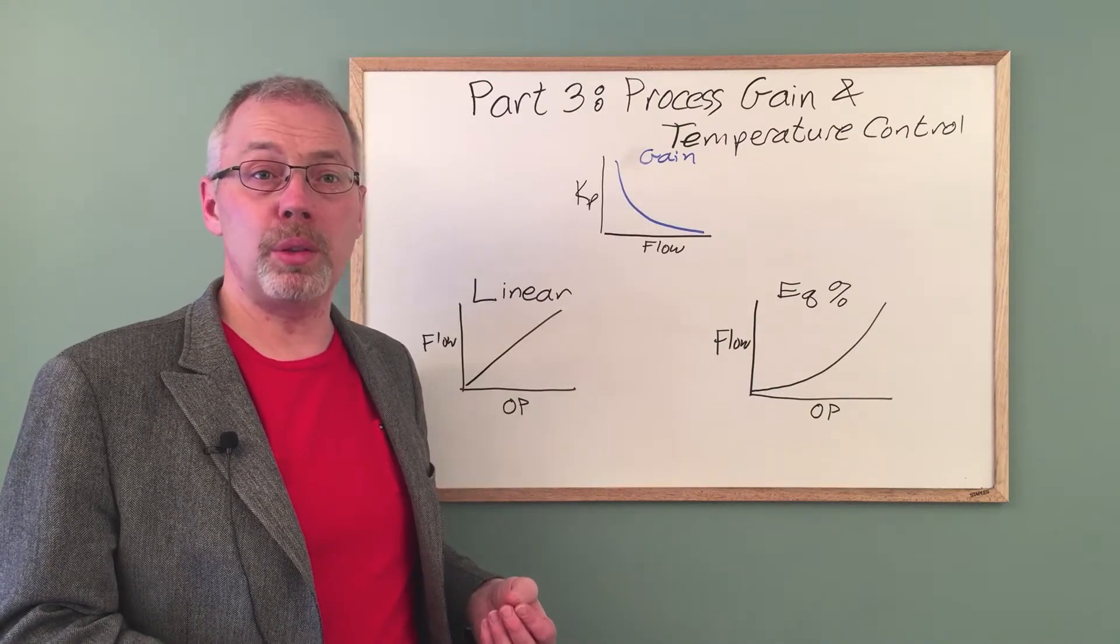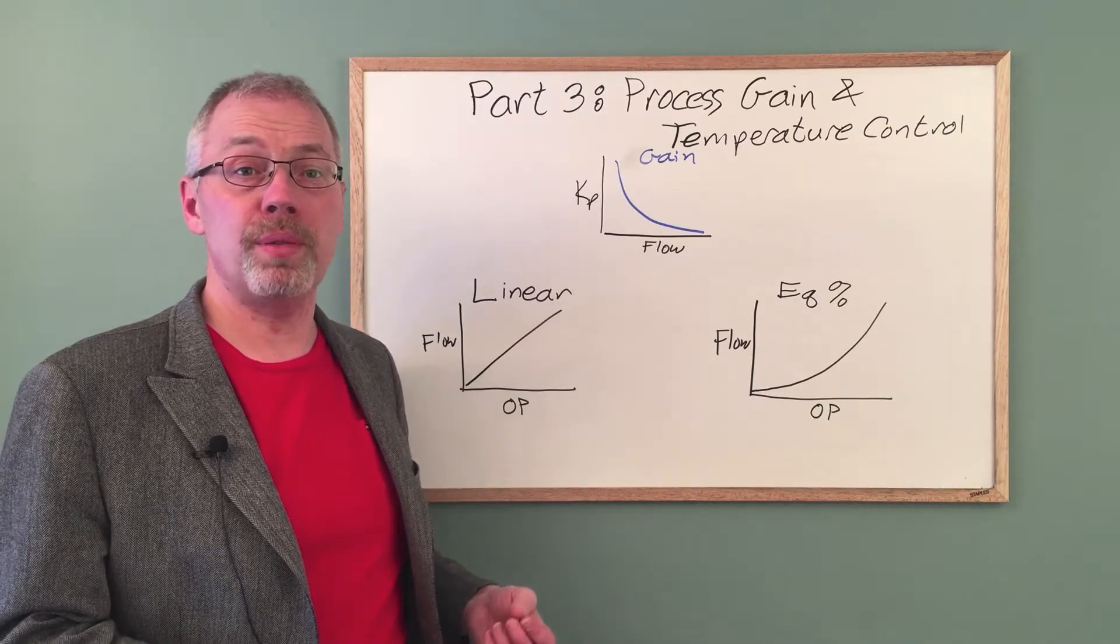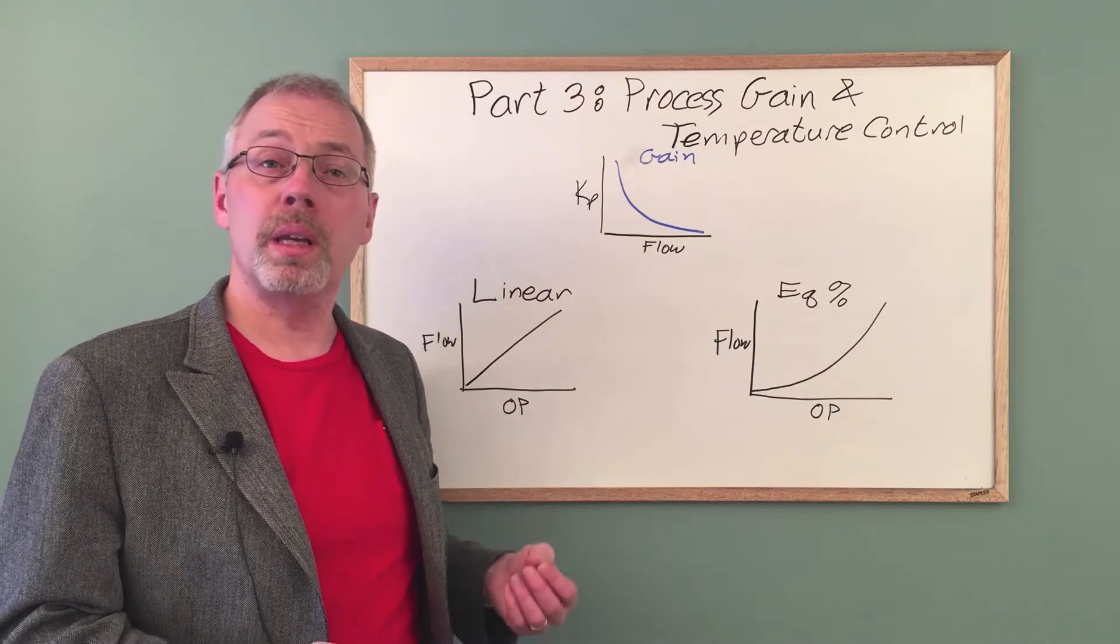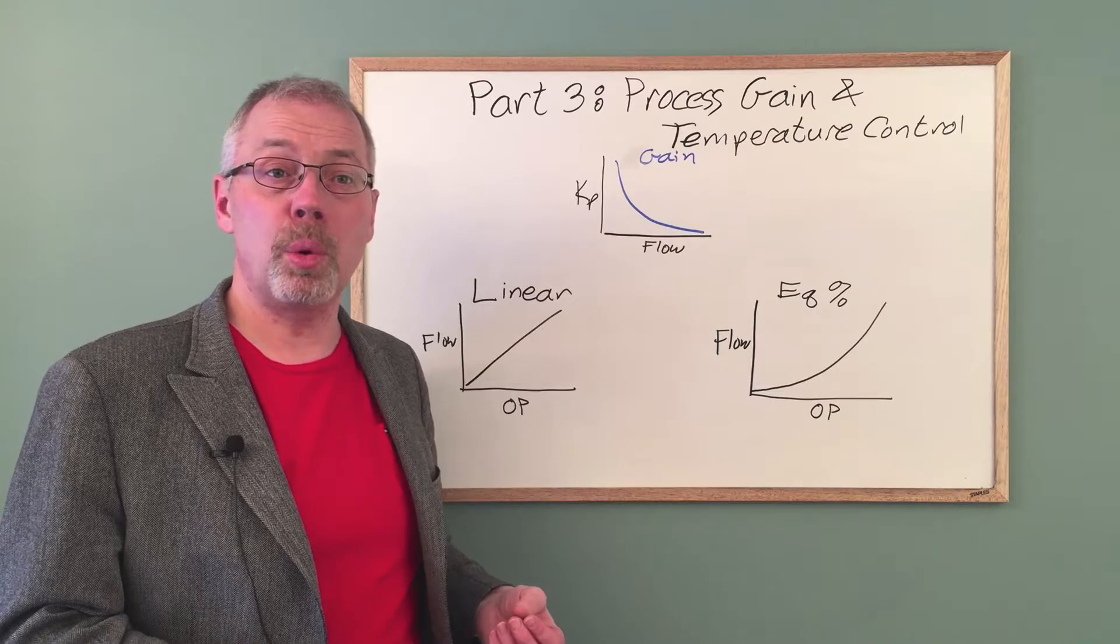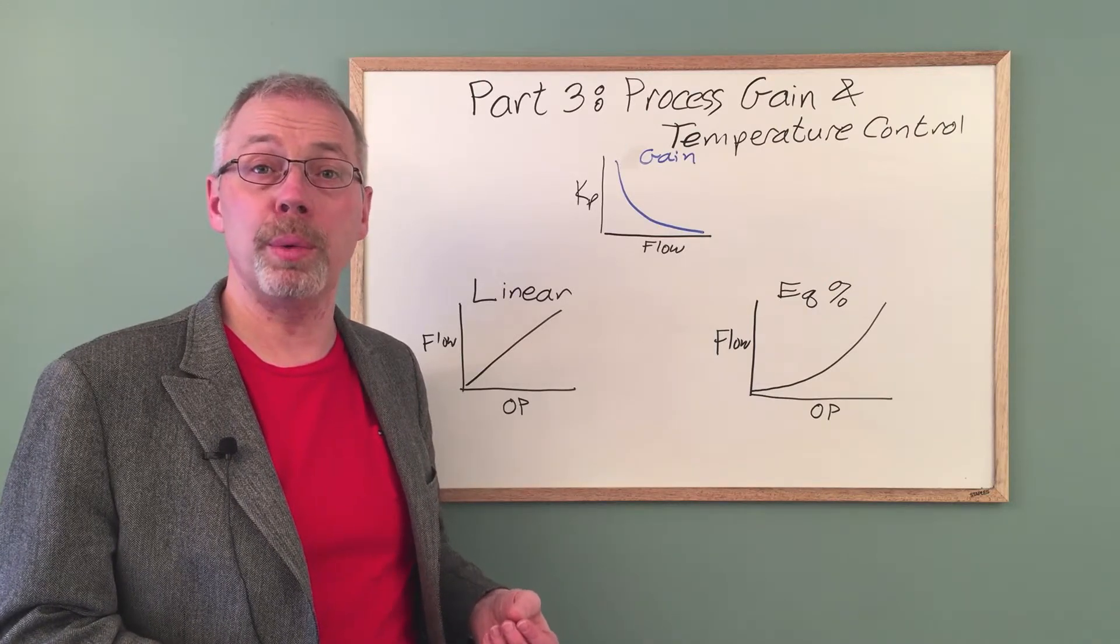But if an equal percent valve is used, the delicate action of the valve when nearly closed counteracts the aggressive process behavior. This produces a more uniform gain over a wide range of flow rates.